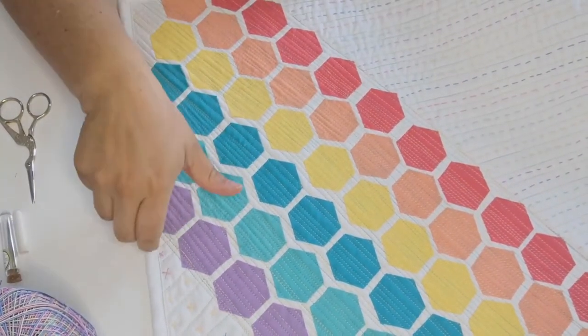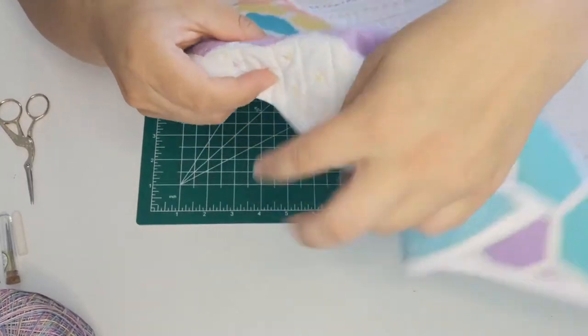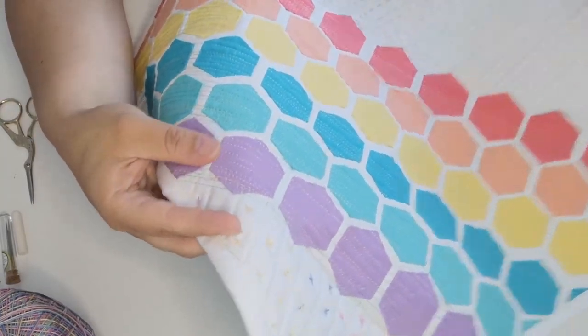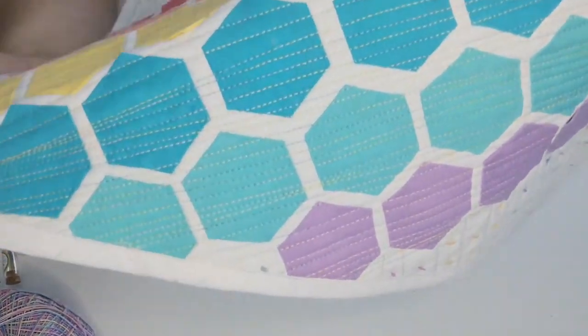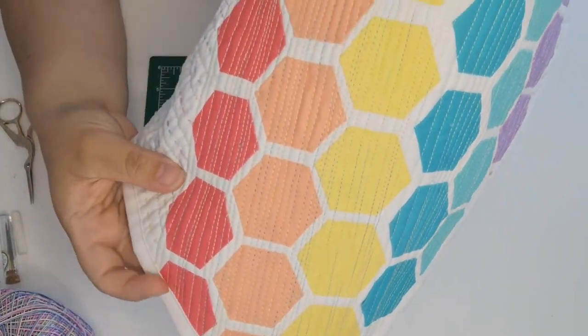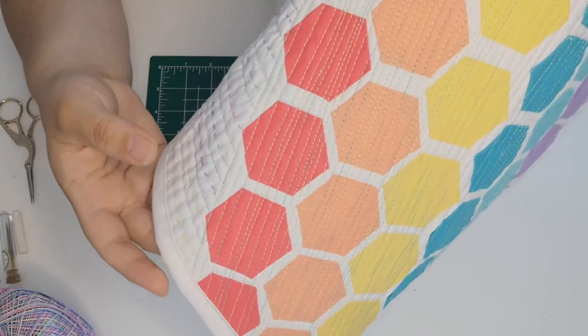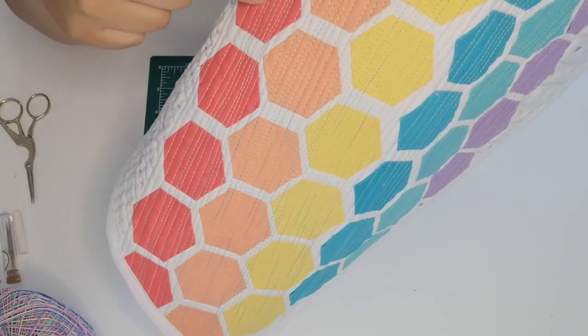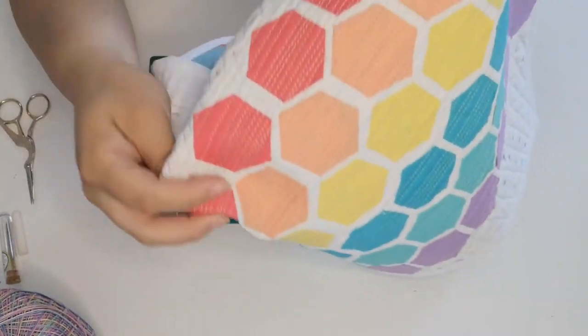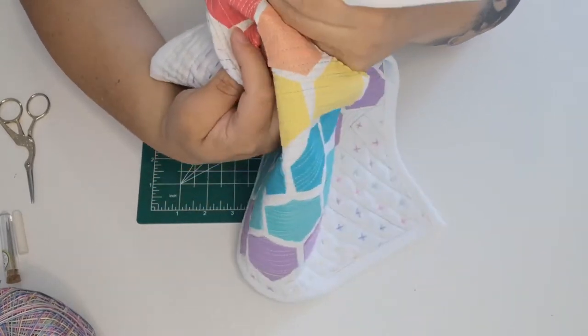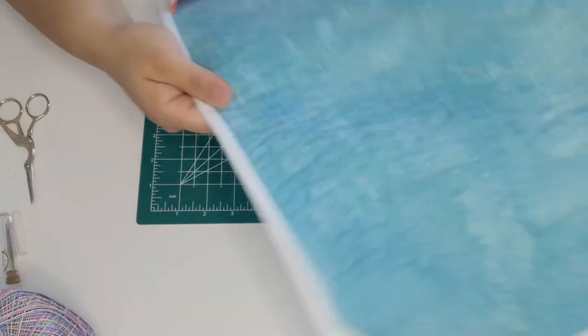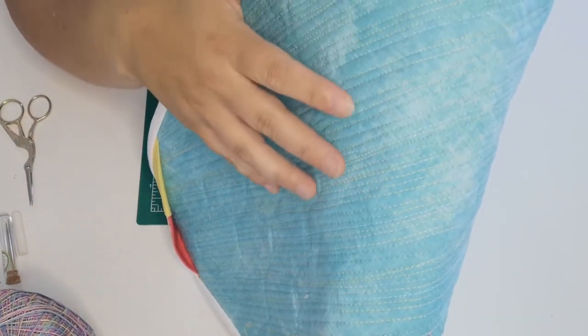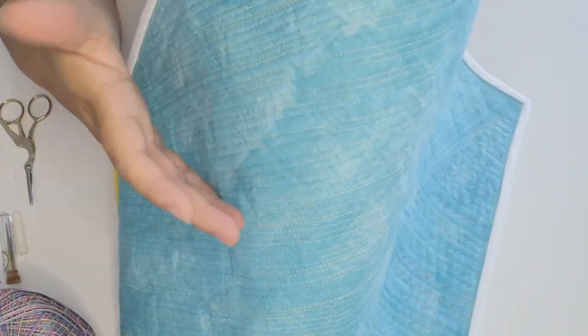I used my walking foot and I just went back and forth over top of the hexis over and over again. One thing I will point out is I wanted to make sure that I got as close to all of these corners as possible so that way the hexis weren't lifting up. Matchstick quilting, straight lines - it's really modern and really in right now and it's super easy to do. The closer that you stitch together, so the more lines that you put, the denser that this part of the quilt will be. All of these stitches, the closer they are the more dense it's gonna be.